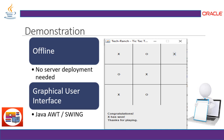Here we have two key points to make sure. It is an offline application where we don't need to have a server deployment, and we will be having a graphical user interface using Java, AWT, and Swing API.